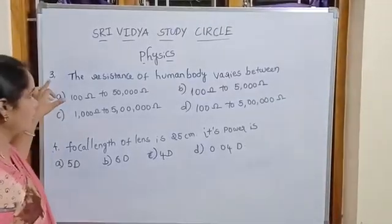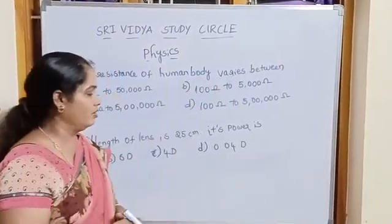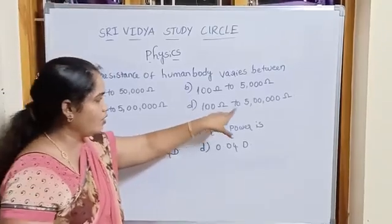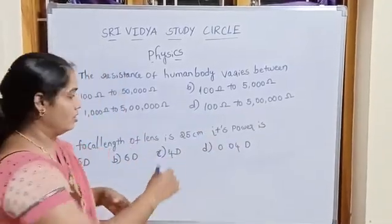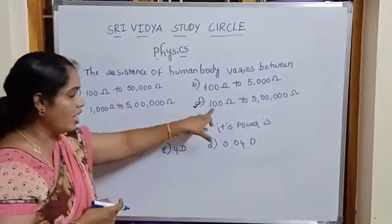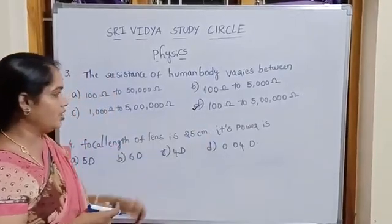Next, third one. The resistance of a human body varies between. First directly, we choose the option, that is 100 ohm to 5 lakh ohm. Because we learn in electric shock, human body varies 100 ohms to 5 lakh ohm. Then direct option D.